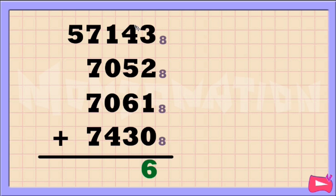Next column: 4 plus 5 plus 6 plus 3 is 18. 18 is not an octal number, so we need to convert it into octal. Let's put 18 in our dividend and the base 8 as our divisor.